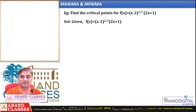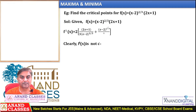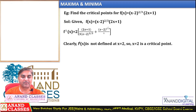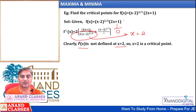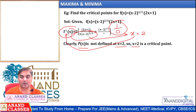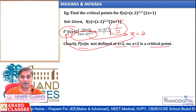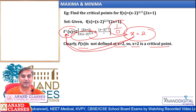Find the critical point of f(x) = (x − 2)^(2/3) · (2x + 1). Apply the product rule (u·v formula) to get the derivative. Now, f′(x) is not defined at x = 2 — when we put x = 2 in the denominator, we get 0, so the function is not defined there. This means f′(x) does not exist at x = 2, so x = 2 is a critical point.